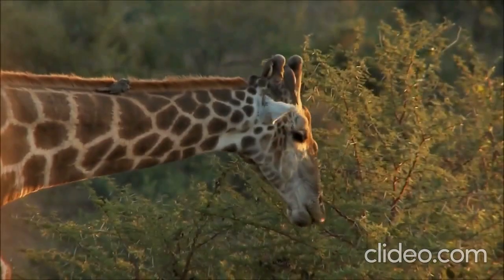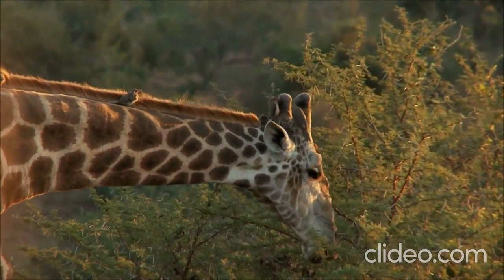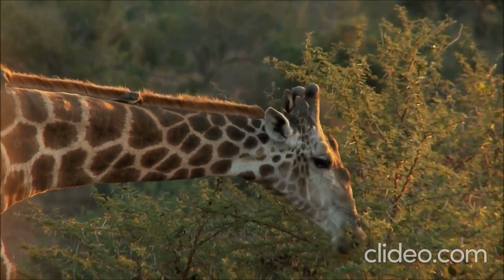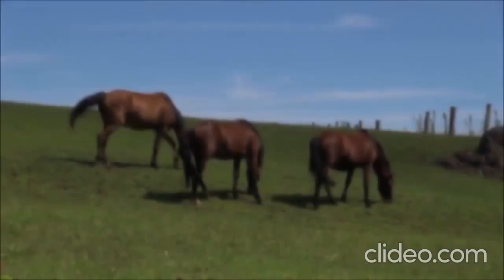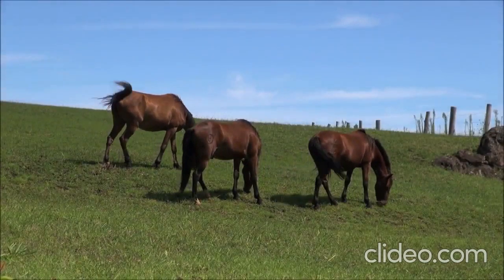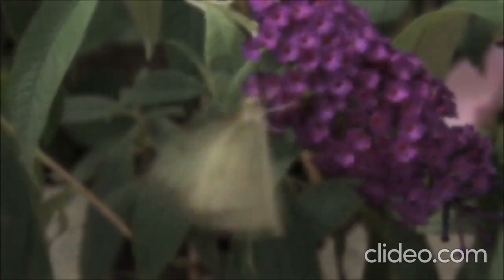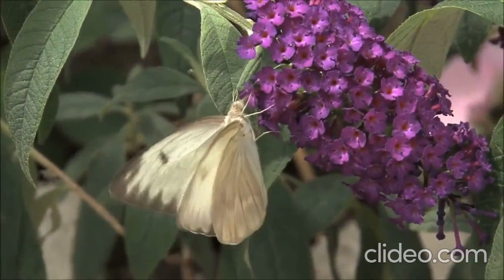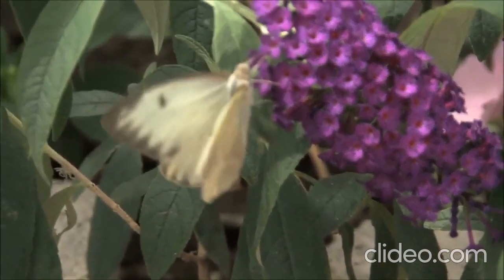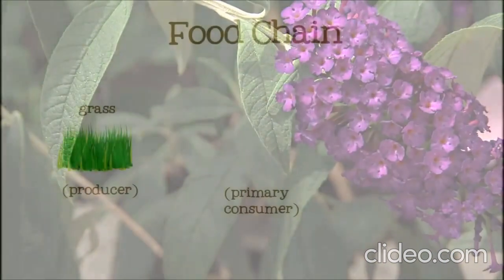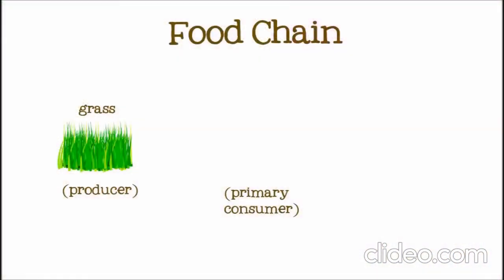When an animal eats plants, some of the energy the plant captured from the sun is transferred into the animal's body, where it is used for things like moving, breathing, and growing. An herbivore is called a primary consumer. Primary means first, because an animal eating plants is the first consumer in the food chain.